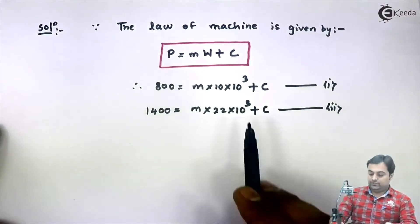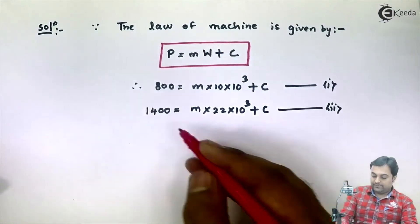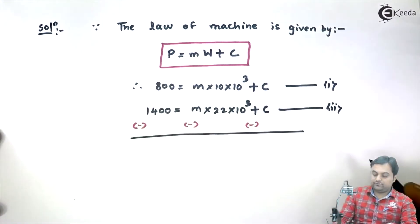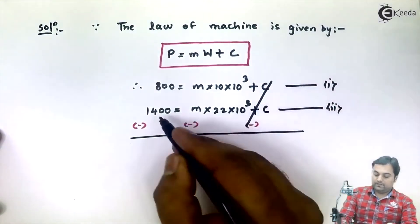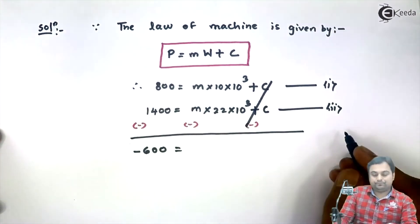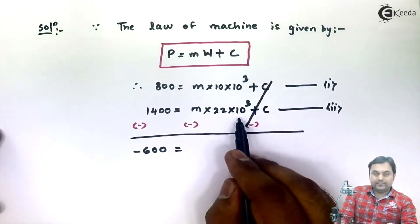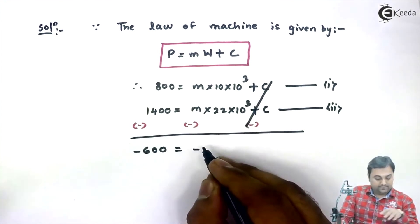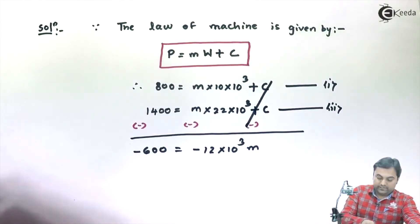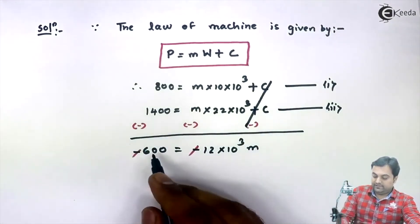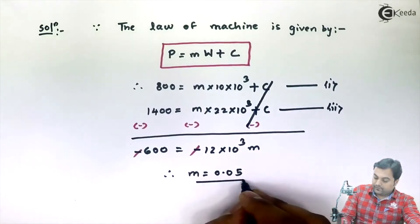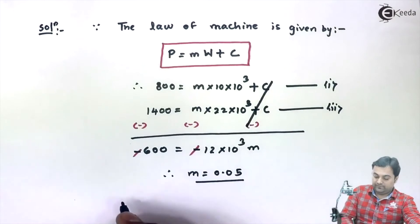From the two equations, solving simultaneously by changing the sign so C cancels: minus 1400 plus 800 gives minus 600, equal to minus 22 into 10 raised to 3 plus 10 into 10 raised to 3, which gives minus 12 into 10 raised to 3 times M. The negatives cancel from both sides, and 600 divided by 12 into 10 raised to 3 gives M = 0.05.